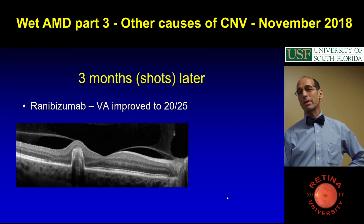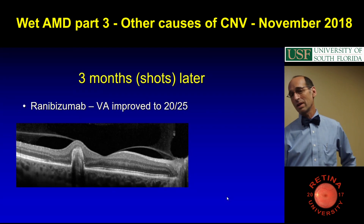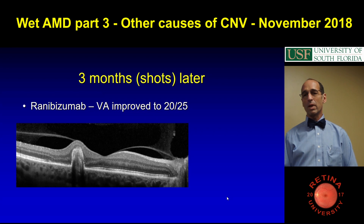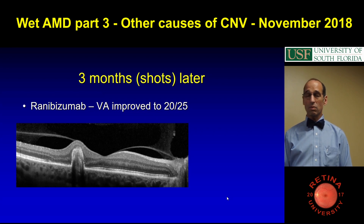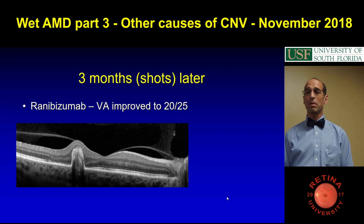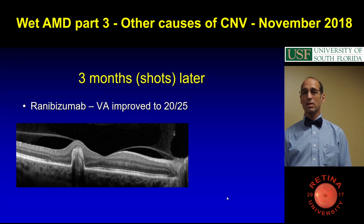So this is three months after the shot — she'd be great, she was 20/25. It's a little tricky on what to do next, because she's one-eyed, so you don't want to mess with the eye. But on the other hand, histoplasmosis has a pretty good prognosis. I think because I stretched her out.